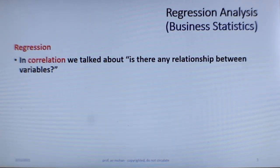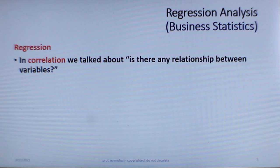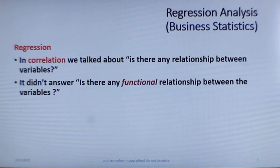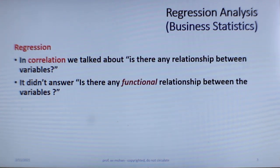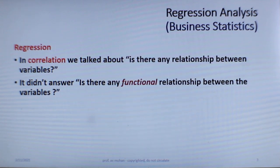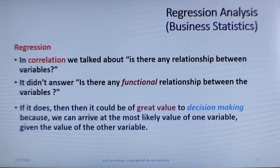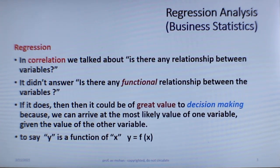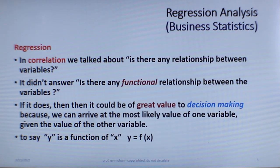In correlation we talked about whether there is any relationship between the variables — we established whether they are related or not. Now in regression we go a little further to understand the functional relationship: how the dependent variable depends on the independent variable. If you are able to establish such a functional relationship, it is of great value for decision making. In simple mathematical terms, y is a function of x — and that is what regression is about.